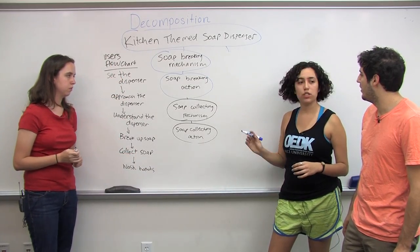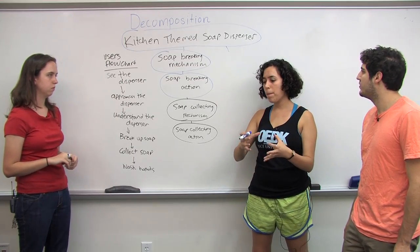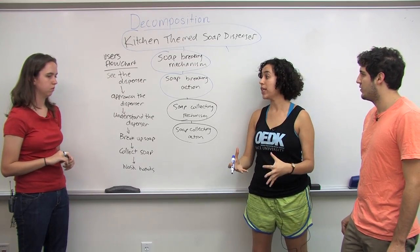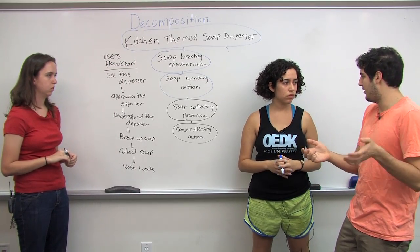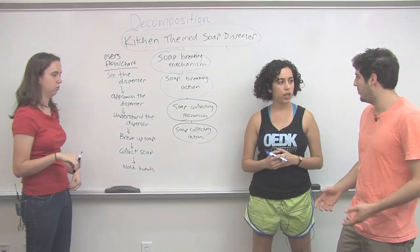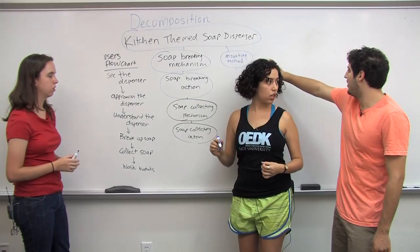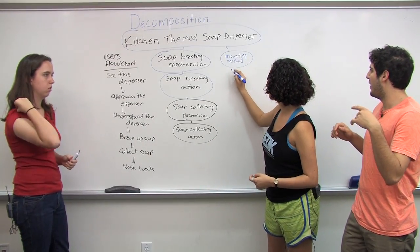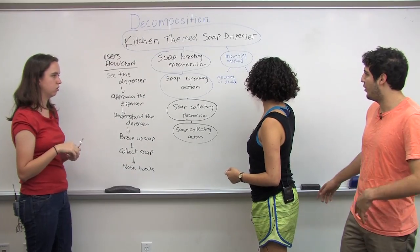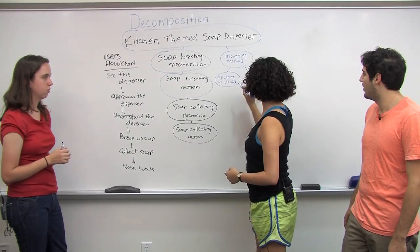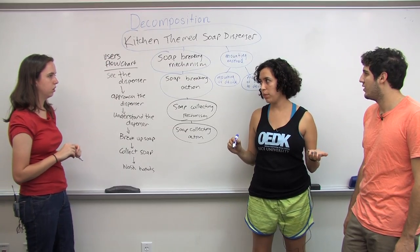We're going to create another branch that deals more with the structure of the device and how it's all held in place. There has to be some sort of structure that holds the device to whatever we decide to mount it on — there has to be some sort of mounting point. The mounting method itself can be split into two categories: mounting of the device to the bathroom, and mounting of the soap to the device.